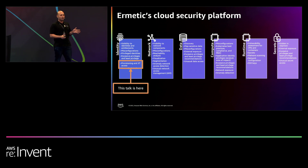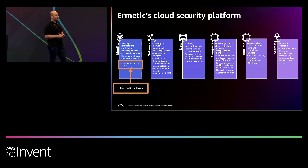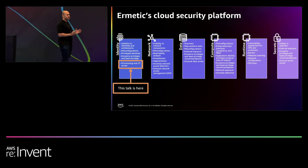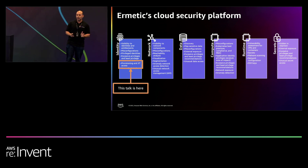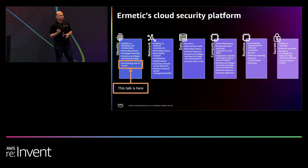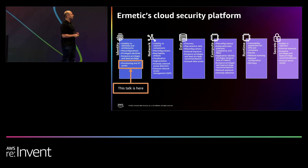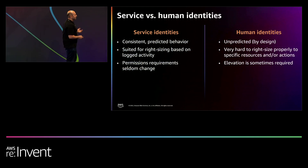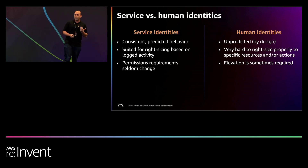We do a lot of layers. One of them is identity, and one of the abilities that we provide for identities is the just-in-time access that we're going to talk about today. The first thing we want to do is understand why this feature is important. To get there, we first need to understand that there's a significant difference between service identities — identities used by workloads — and human identities — identities used by people.